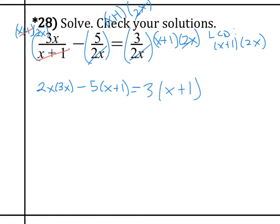So then we distribute and solve for x. So we get 6x squared minus 5x minus 5 equals 3x plus 3. Then we move everything to one side, set it equal to 0.